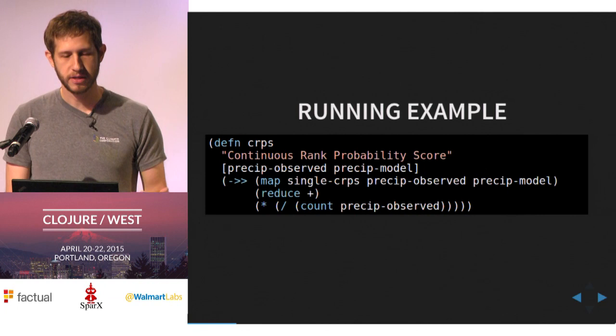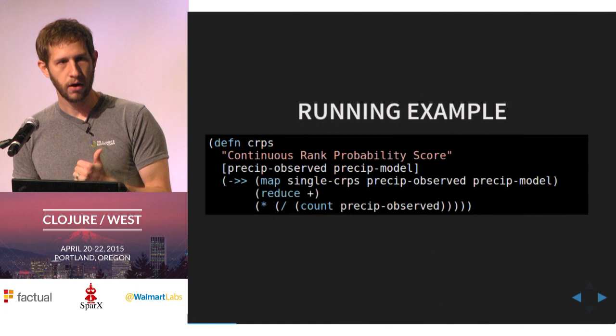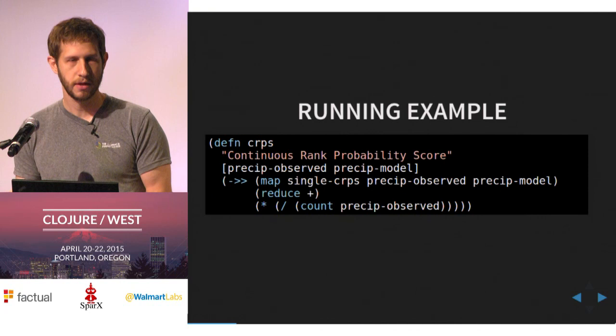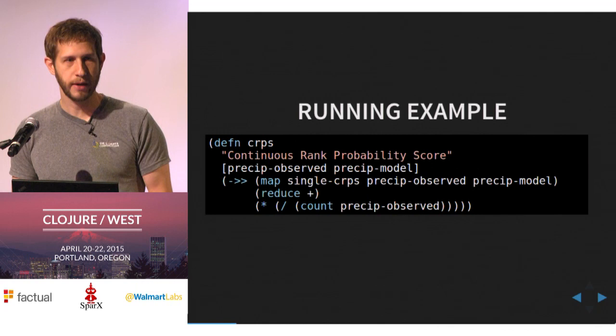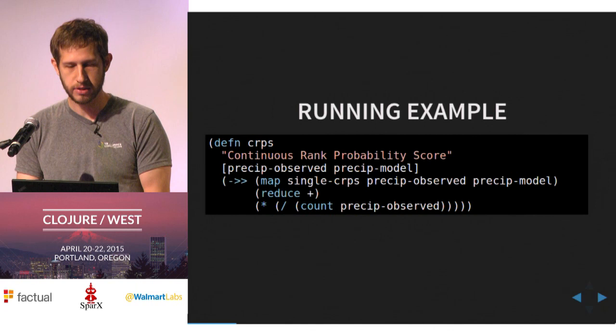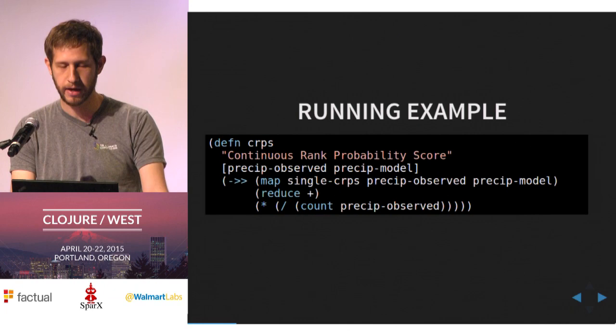There are a couple things to notice. One, there's a lot of work happening — CRPS is kind of complicated, and all that work is happening in the map. Second, this is a map-reduce, which is common in Clojure because it's expressive, and common outside of Clojure because it's an easy way to get parallelism. In parallelism, you want to divide your work so it can be done simultaneously, and map is a good way to divide that — that's why Hadoop MapReduce and Google MapReduce use this same pattern.